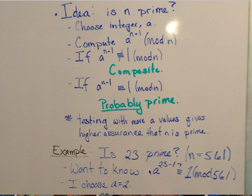We want to know is 23 prime, so n equals 23, not 561. So we want to know a to the 23 minus 1, because the n minus 1, is it congruent to 1 mod 23?